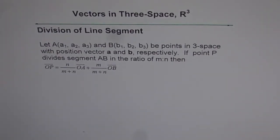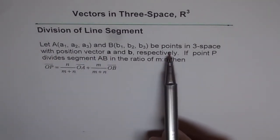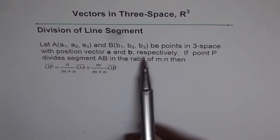Vectors in 3 space R³. We will consider division of line segment here. Let A and B be points in 3 space with position vector a and b respectively.